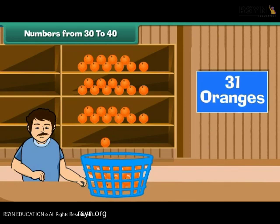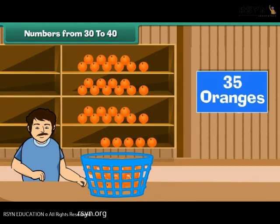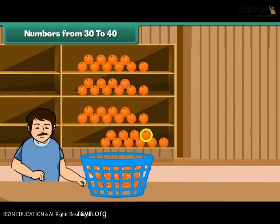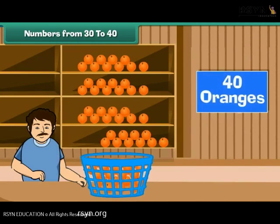Keep adding one orange at a time to the fourth shelf. And the last orange. Now there are four groups of tens, which make 40.